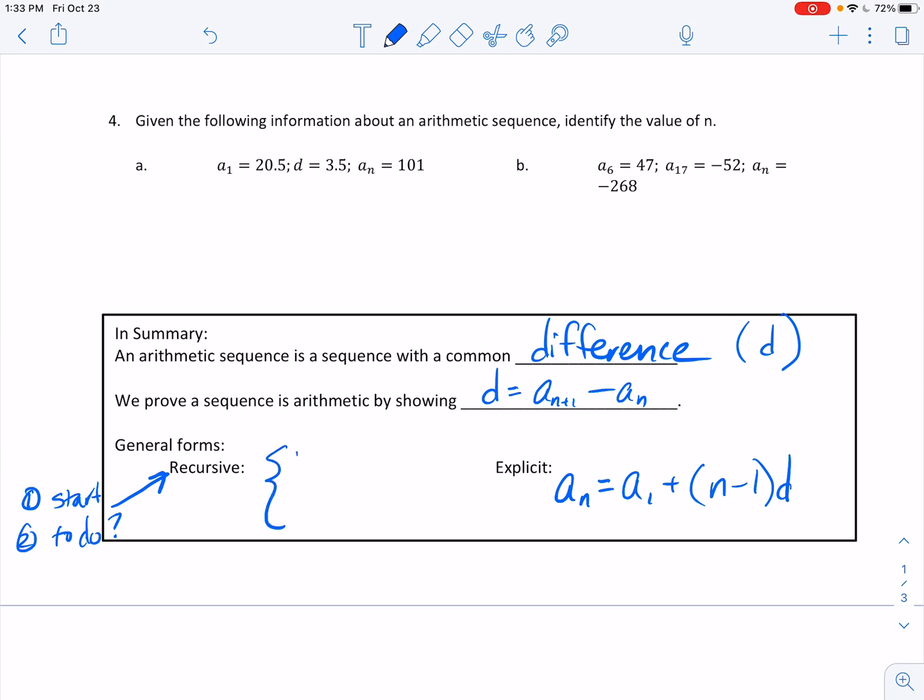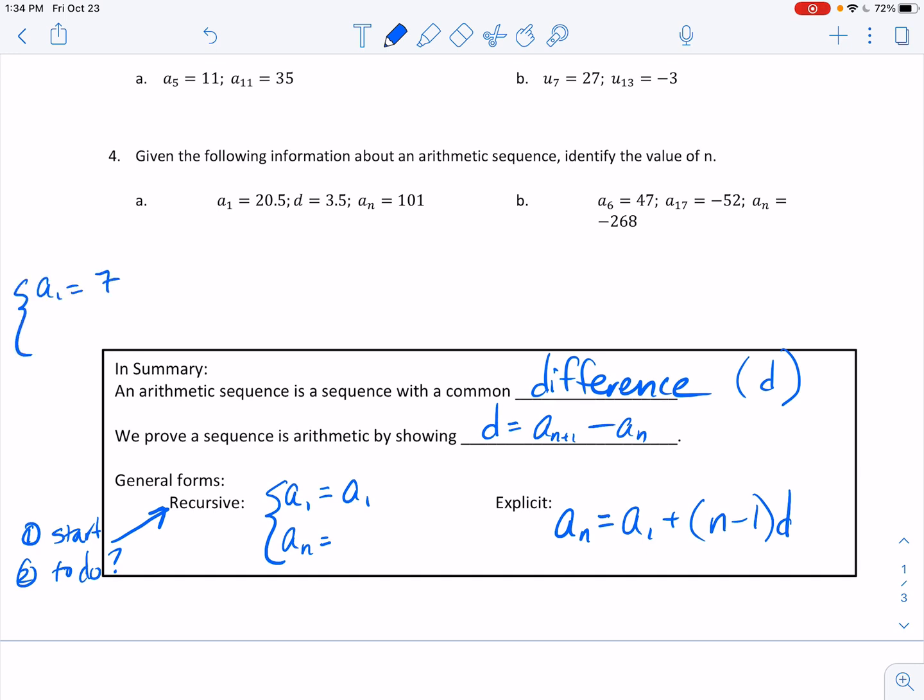We'll talk about recursive in just a second, but the explicit formula we just said was a sub n is equal to a sub 1 plus n minus 1 times d. The recursive formula, there's always two things that you have to do for a recursive formula. You have to tell me where to start and what to do. If I just tell you add 4, you're like, great, Ms. Kosh, add 4 to what? But if I just tell you, we're starting at 7, you're like, thanks, Ms. Kosh, now what?